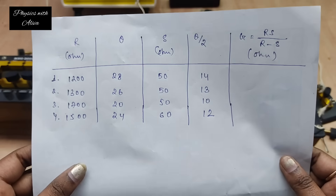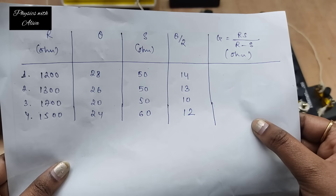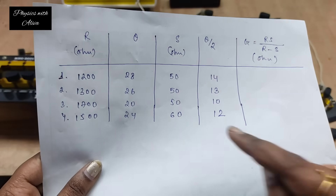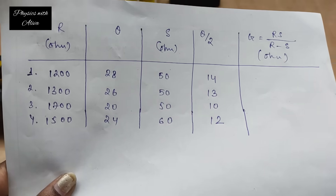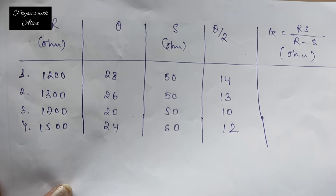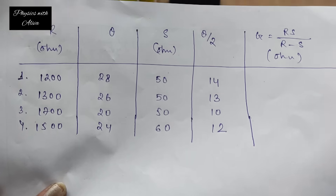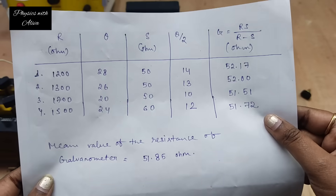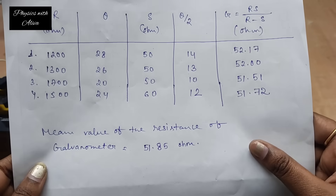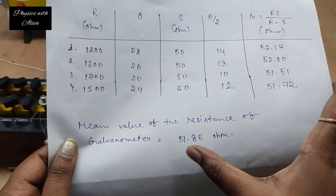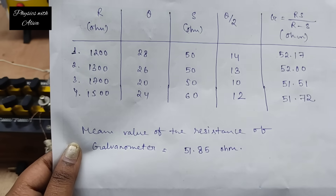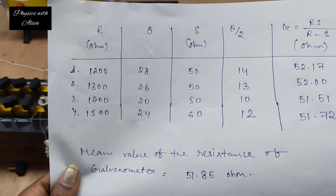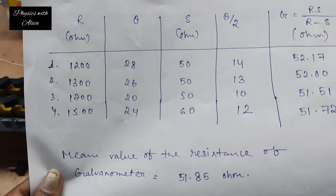We have taken all the readings. Now we calculate the resistance of the galvanometer G using the formula. In most cases the value of S remains the same — you should not worry about this. We have calculated the mean value of the resistance of the galvanometer, which is 51.85 ohms. This is the average value of G. I hope you understand the process of finding the resistance of the galvanometer by half deflection method. Now we will calculate the figure of merit.